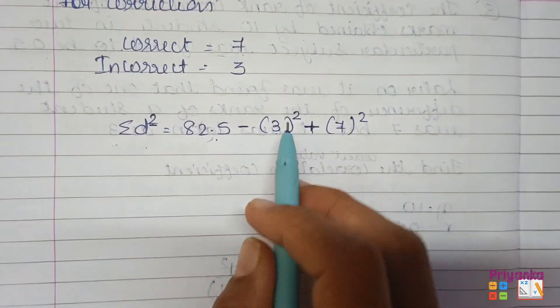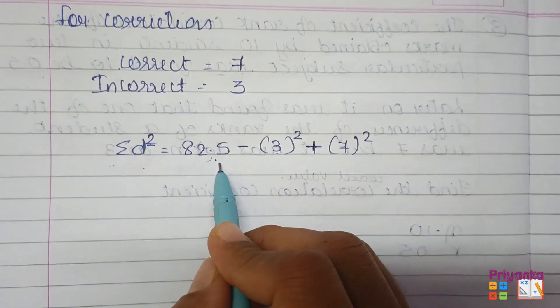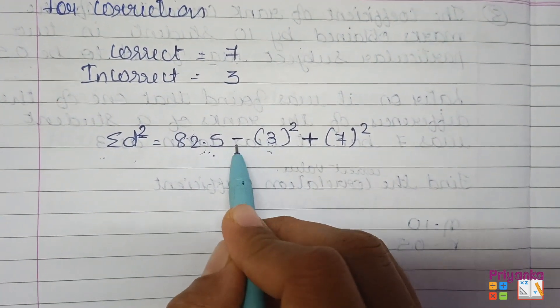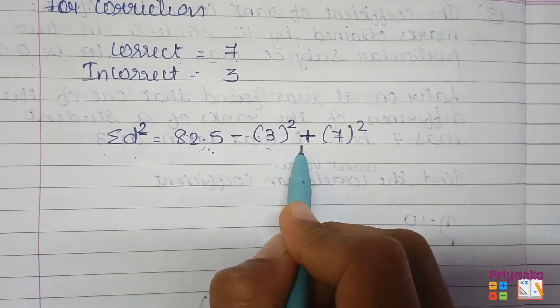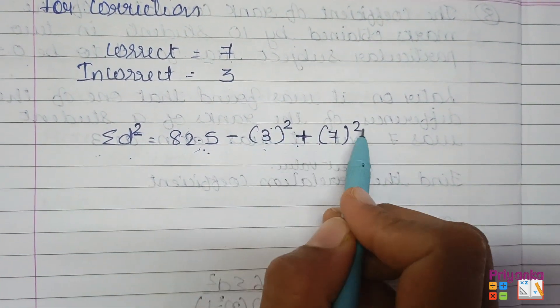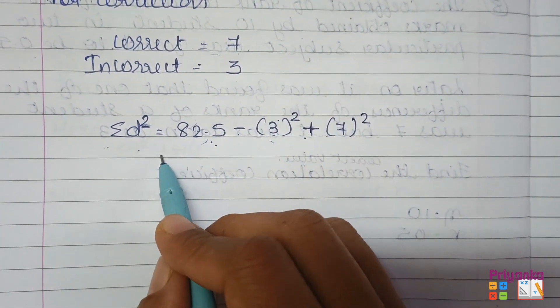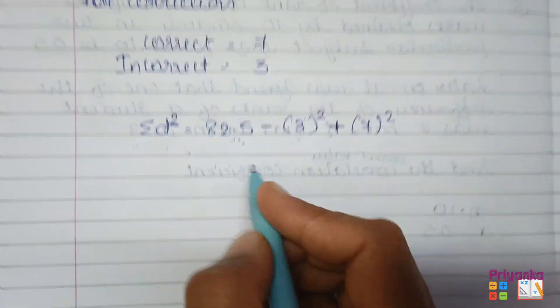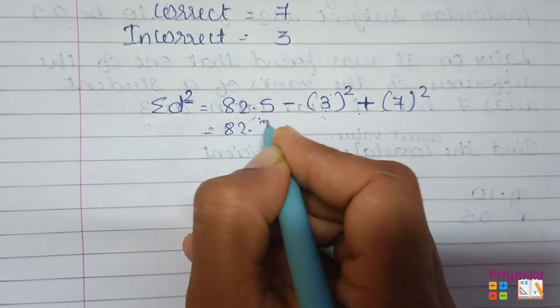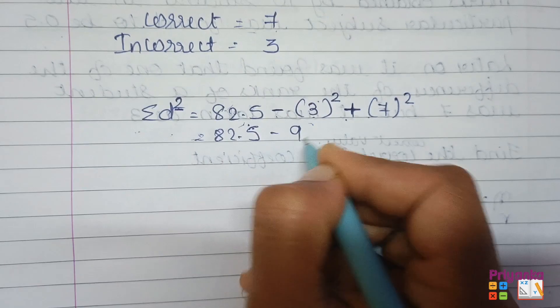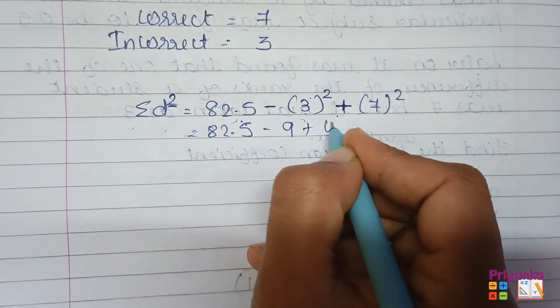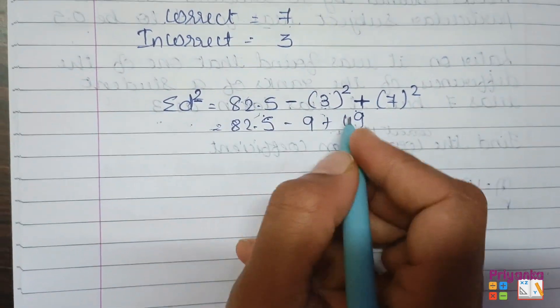Every time remember that after writing sigma d square you have to minus the incorrect and plus the correct, and don't forget the square has to be kept when you are keeping with the value of sigma d square. So first of all, 82.5, 3 times 3 is 9, and 7 times 7 is 49. Take out the calculation, you will get 122.5.